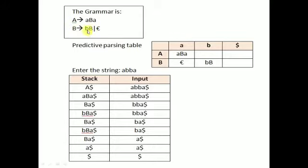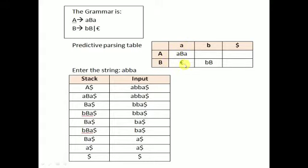For the second variable B, B gives BB. Here capital B gives small b, so in the column capital B to small b, we write BB. The next rule is B gives epsilon. There is a rule that when we have a grammar rule B to epsilon, you have to write this in the column of the follow of the left hand side variable.